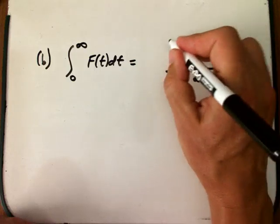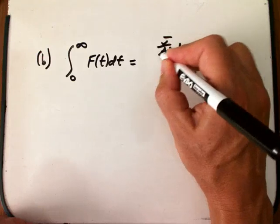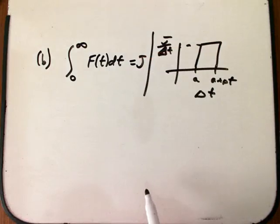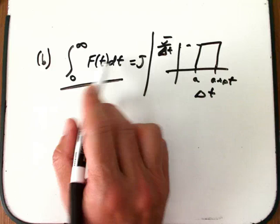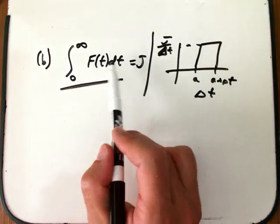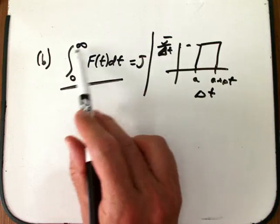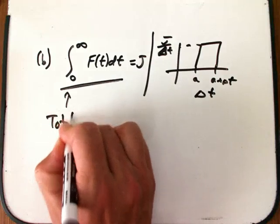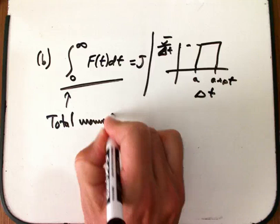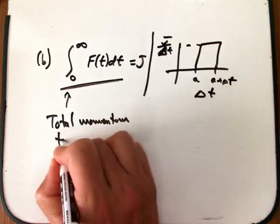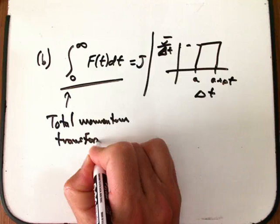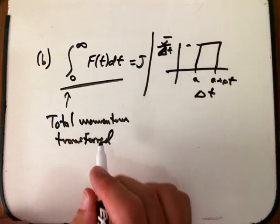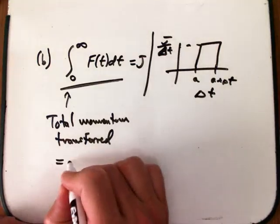Let's redo the picture here. And this height is J over delta T. That's a delta, not an A. And this width is delta T. So the integral is J. But what does this mean? For any F of T, for any forcing function, we're integrating force times time. So the integral of force times time for some force that's acting on a system is the total momentum transferred.